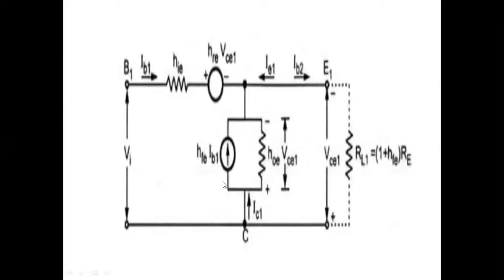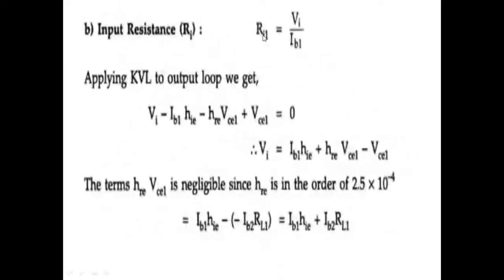Coming to the figure, this is the equivalent h-parameter model for the first stage or first transistor. Vi is the input voltage, Ib1 is the input current. So RI1 is equal to Vi by Ib1. If we want to know the value of input resistance, we should find out the value Vi by Ib1.